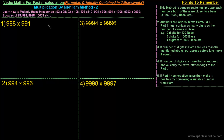The method is the same — there is no difference. As we have seen in the previous class, first of all we have to find out the base to which the numbers are closer. So these numbers, 988 and 991, are both closer to the base one thousand, and obviously less than one thousand.